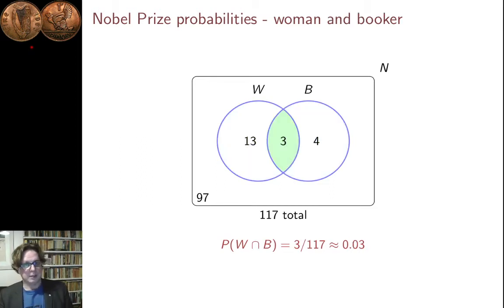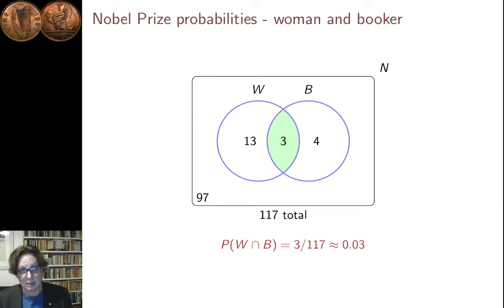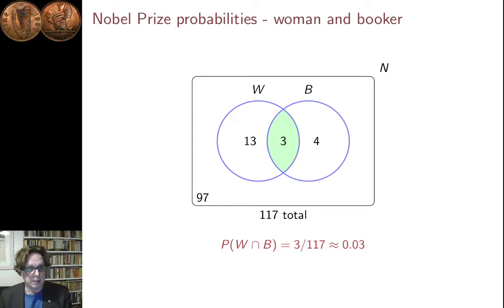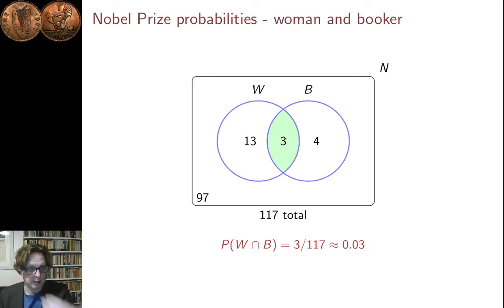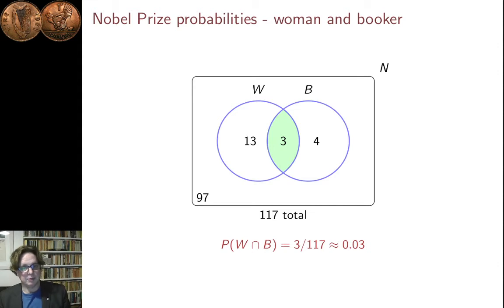Here's the much more exclusive case — the intersection. To be in this intersection, the prize winner has to be both a woman and a Booker Prize winner. It's points that have both properties, so the intersection is the same as 'and' — something in the intersection belongs to both events. The event of being a woman and a Booker Prize winner, in other words the event of being in W intersection B, covers three people. The probability there is 3 over 117, which is about 0.03.